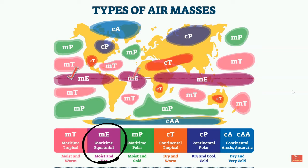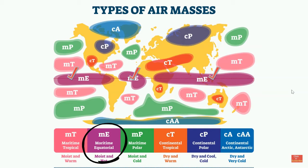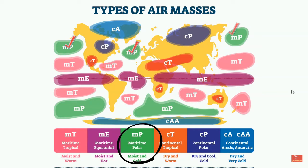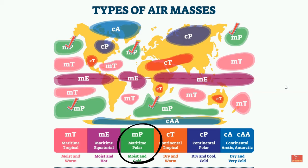Maritime equatorial air masses are hot and moist and are found at the equator; on this diagram they are purple. A maritime polar air mass will be cold and moist. Whenever an air mass is maritime, it will always be moist because it forms over oceans and water. Whenever you see the word polar, think of the North Pole — very cold. They form over the Northern Atlantic and Northern Pacific Oceans, and on this diagram they are colored green.